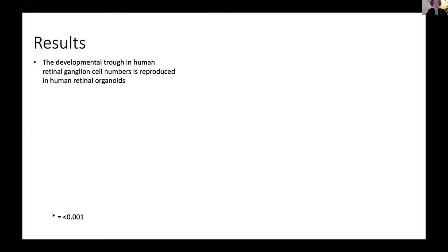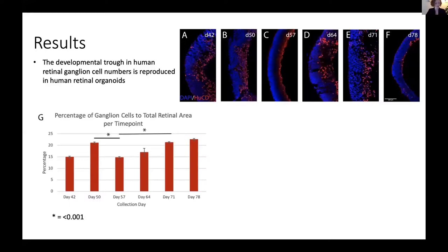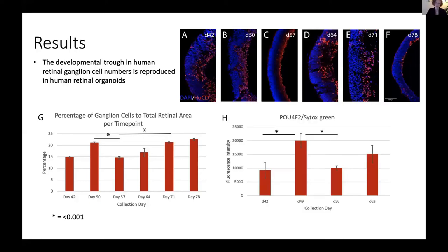My first result is that the developmental trough in human retinal ganglion cell numbers is reproduced in human retinal organoids. You can see on the immunofluorescent images at the top of the screen, with red indicating retinal ganglion cells, and on the graph that the number of retinal ganglion cells increases steadily, then falls suddenly at day 57, and then increases steadily again. This dip in retinal ganglion cell numbers is suggestive of increased cell death and is consistent with the developmental timing of the early wave described in other vertebrates. We confirmed these results with a second marker, POU4F2, shown on the second graph, which very closely mimics the results from our first study.